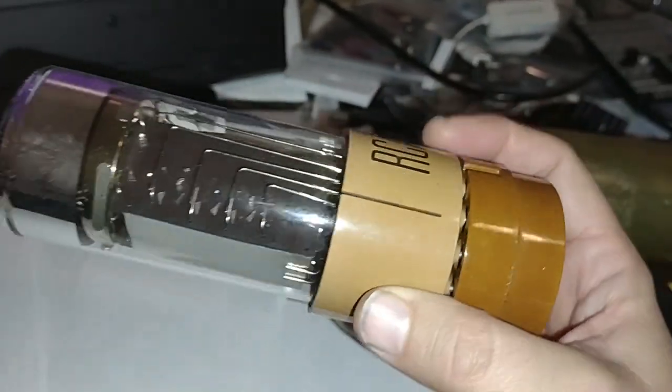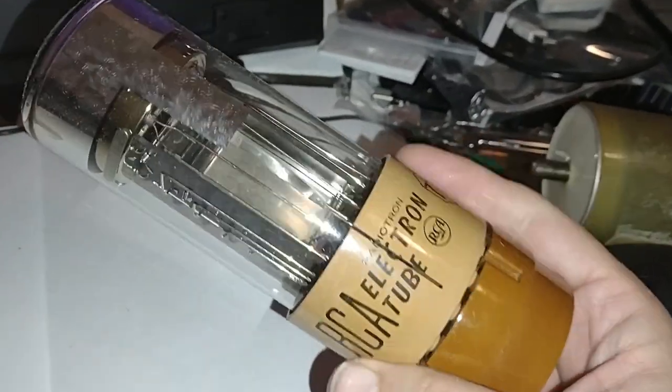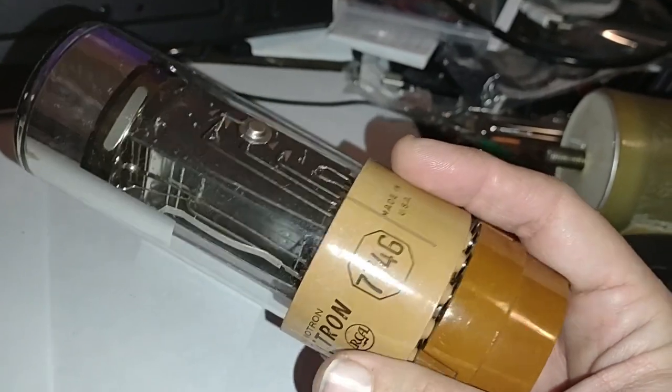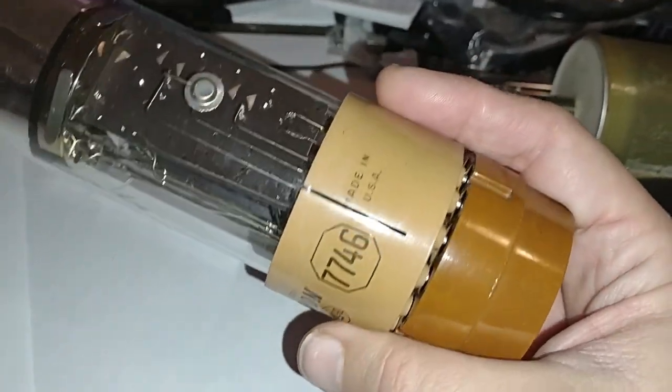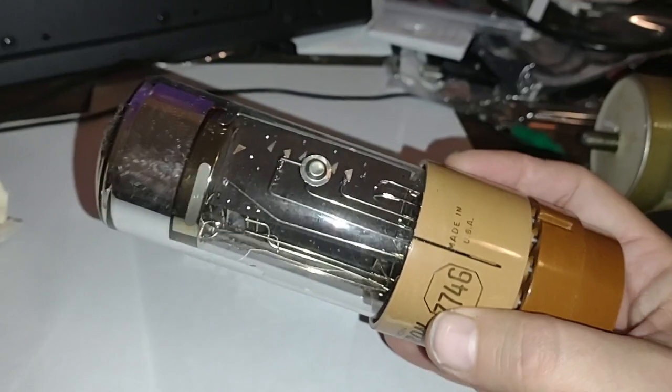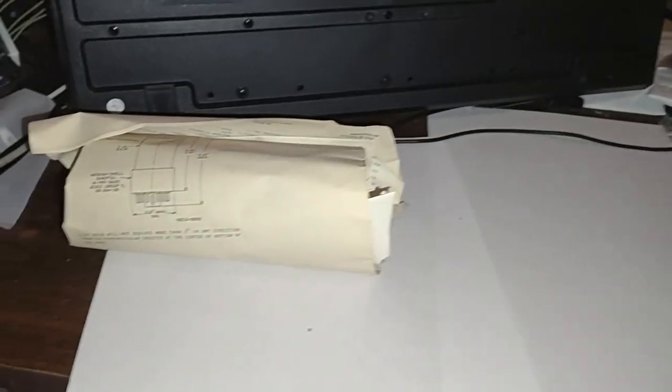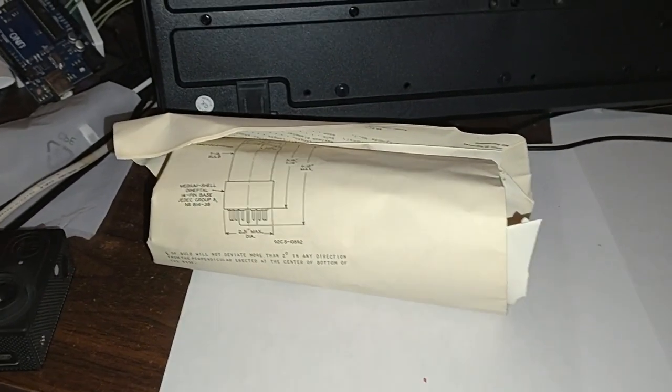These are different levels of the dynodes, and let's take a look here, here's the pinouts. And it's got this original socket and everything with it. RCA electron tube 7746. We're going to put the tube away for a second and look at the documents.